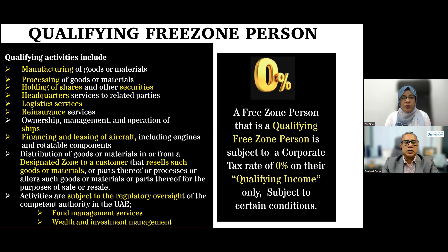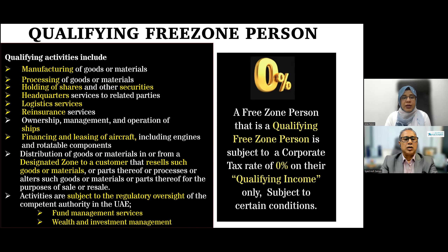These qualifying incomes should be derived from qualifying activities. Qualifying activities as per ministerial decision include: manufacturing of goods or material; processing of goods or material; holding of shares and other securities; headquarter services to related parties; logistic services; reinsurance services; ownership, management and operation of ships; financing and leasing of aircraft including engines and notable components; distribution of goods or materials in or from a designated zone to a customer that resells or processes such goods or materials for the purpose of sale or resale; and certain activities subject to regulatory oversight of a competent authority in the UAE, such as fund management services and wealth and investment management services.